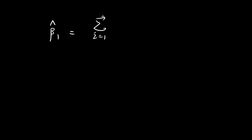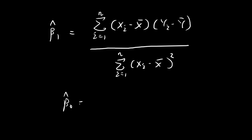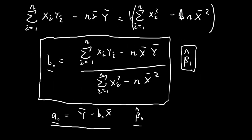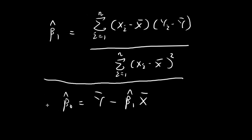The formula for the estimate of beta 1 is equal to the sum of (xi minus the sample mean of x) times (yi minus the sample mean of y), divided by the sum of (xi minus the sample mean of x) squared. And the estimate for beta 0 is equal to the sample mean of y minus beta 1 hat times the sample mean of x. These are the two formulas we're after.